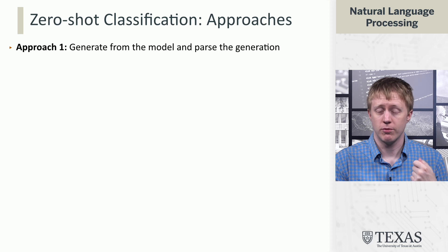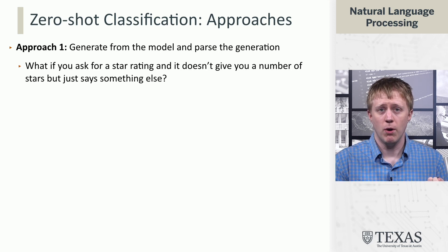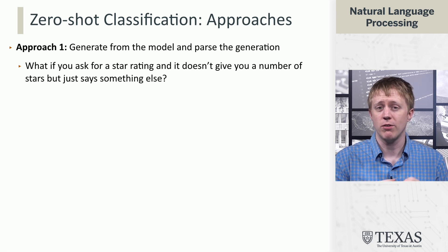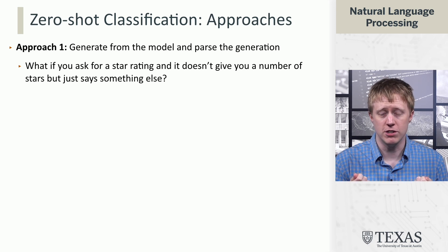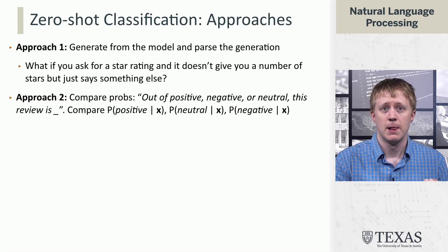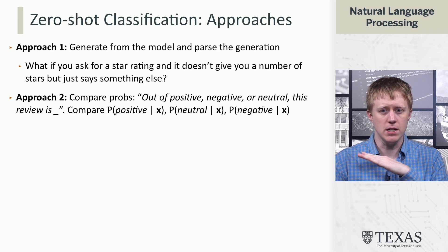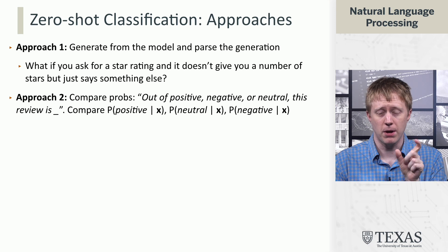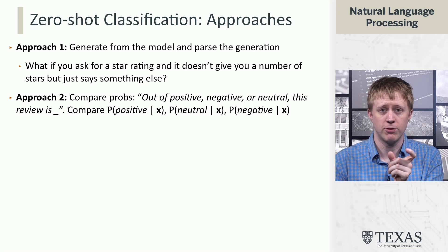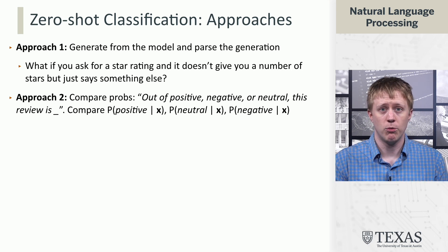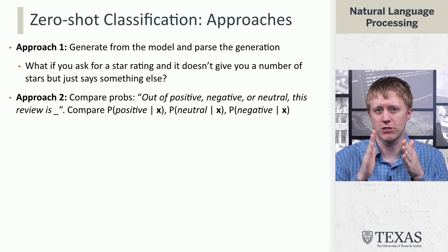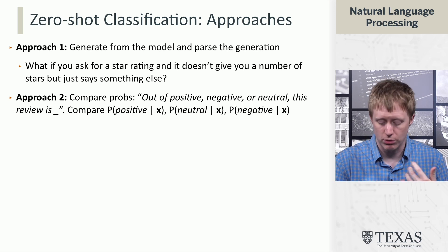However, there can be problems with this. If we just generate from the model, what if we ask for a star rating and it just starts generating something else? We don't necessarily have a good way of constraining it to only use the labels we give it. We can take another approach: specify these three labels and not let it generate freeform. Instead, we only compare the probabilities of the token 'positive' given X, 'neutral' given X, or 'negative' given X — asking the model to score each of them and returning the highest scoring one.